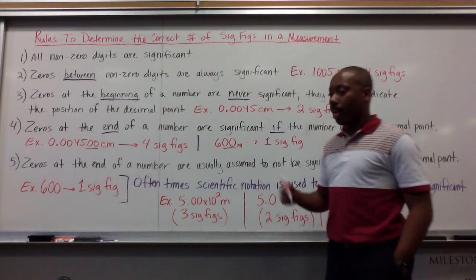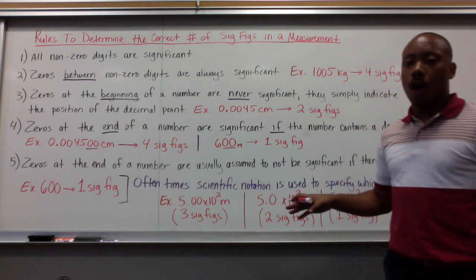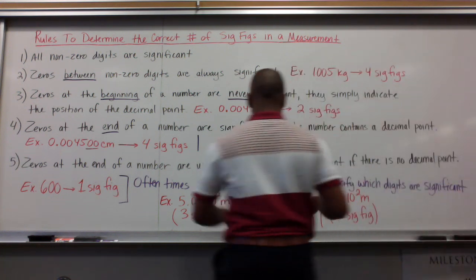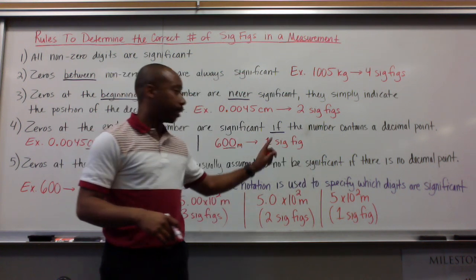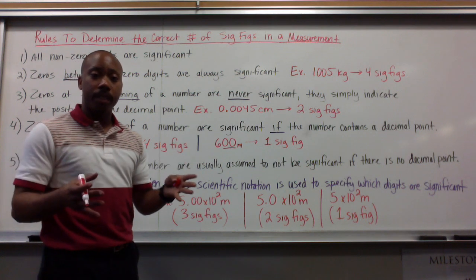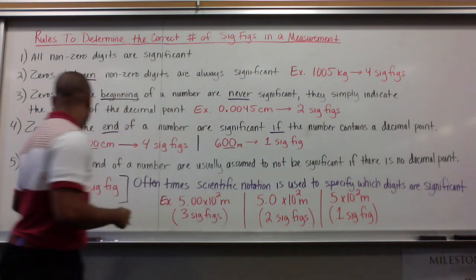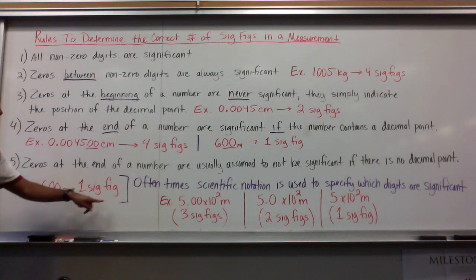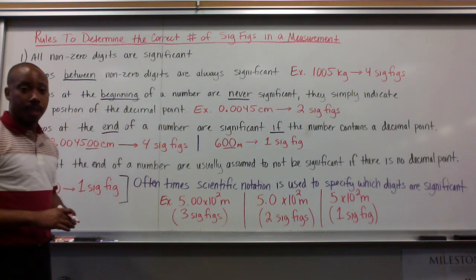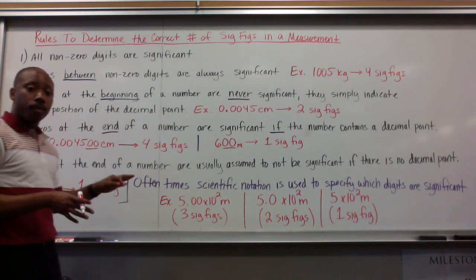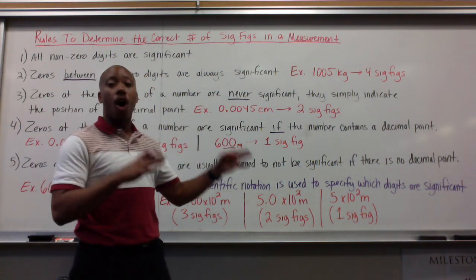Rule number five: zeros at the end of a number are usually assumed to not be significant if there is no decimal point. Zeros at the end are not assumed to be significant when there's no decimal point present. For example, 600 has one significant figure — no decimal point present, thus those zeros are not significant. When this happens, scientific notation is used to specify which digits are significant.